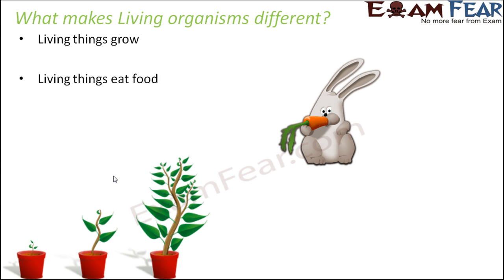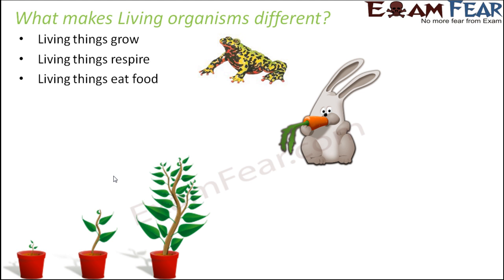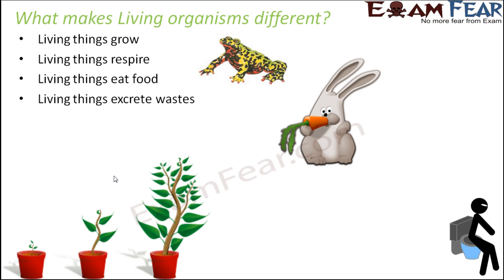Living things grow. We see a plant growing, a human being growing — a small baby boy growing to become a big adult, with height and weight increasing. Living organisms also respire and breathe; there is exchange of gases happening because many processes take place inside the body to generate energy, whereas most non-living organisms do not breathe. Living things also excrete wastes — since many processes take place inside the body, waste materials are generated and throwing those out is called excretion, which is another characteristic of living organisms.